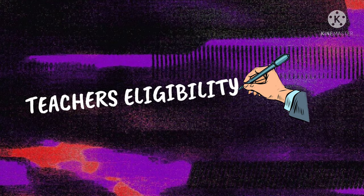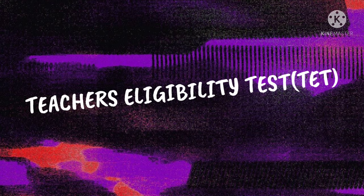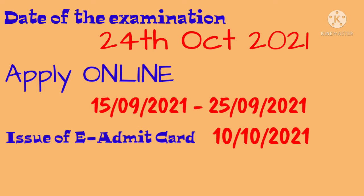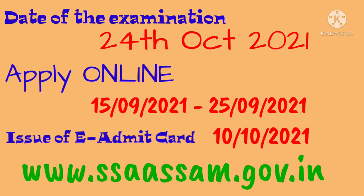Are you willing to apply for the Teacher's Eligibility Test 2021? Then this video is for you. According to the online advertisement, the examination date will probably be on 24th October 2021. The time duration for applying online is 15th September 2021 to 25th September 2021, and the online admit card will be issued on 10th October 2021. All this process will take place through the official website shown on the screen.